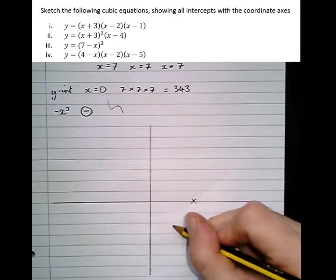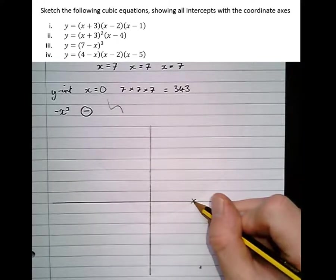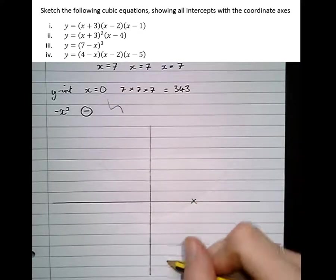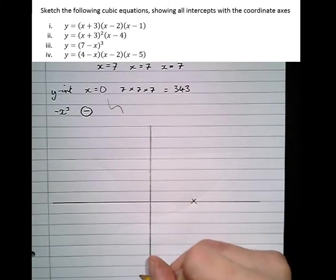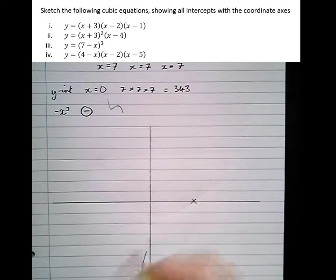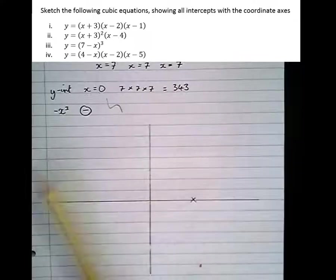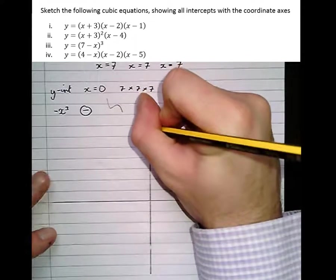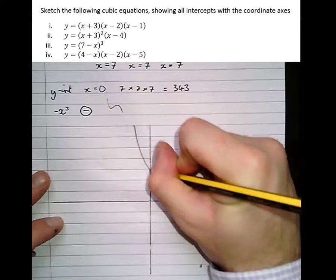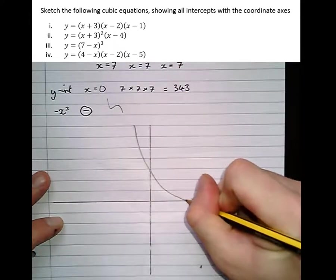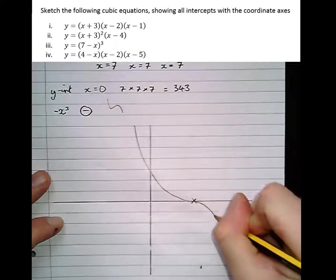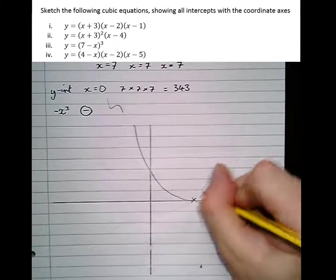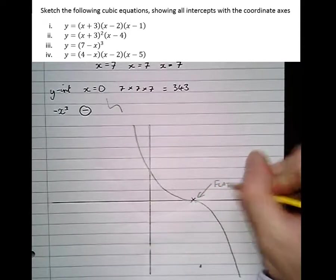So for a double root, what happened was it turned round on itself and just touched the axis. For a triple root, what happens, so drawing that the wrong way there, it starts from up here. So it almost goes as if it's going to turn back on itself, but then it changes its mind again and ends up like that. So here, the graph must be flat if you had to get all the marks.